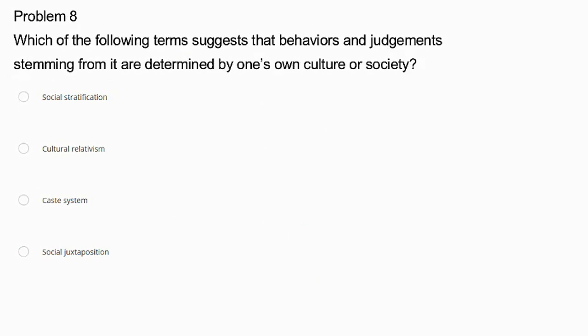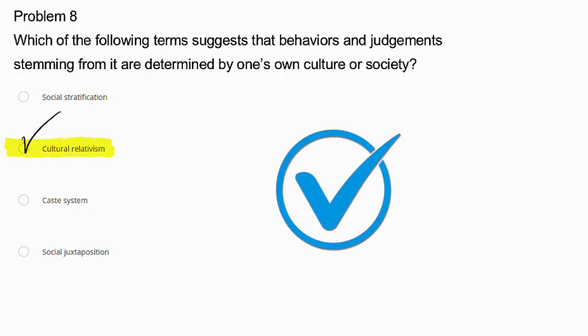Problem number 8. Which of the following terms suggests that behaviors and judgments stemming from it are determined by one's own culture or society? Social stratification, cultural relativism, caste system, or social juxtaposition? The correct answer is cultural relativism. The other options are not correct because social stratification refers to social hierarchies, the caste system is the rigid social structure in India, and social juxtaposition is not a standard sociological term.